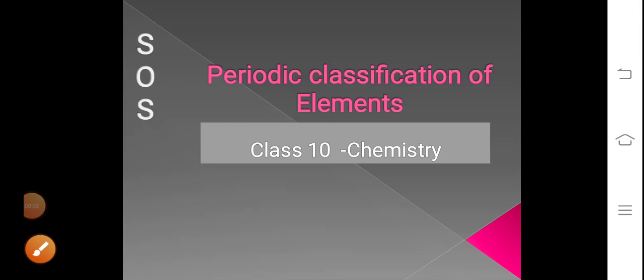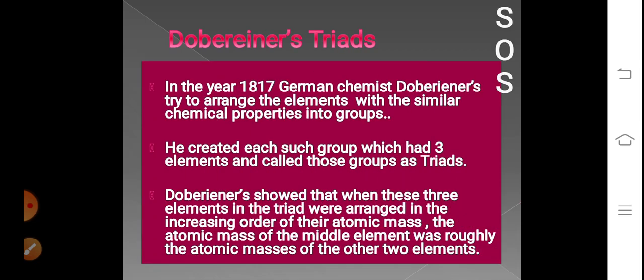Hello students. This is the continuation of the lesson on periodic classification of elements. In this session, let us start studying about Dobereiner's Triads. In the year 1817, the German chemist Dobereiner tried to arrange elements based on similar chemical properties into groups, and each group consisting of three elements was called a triad.